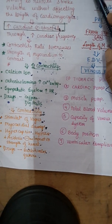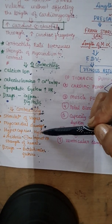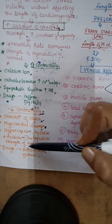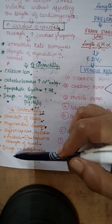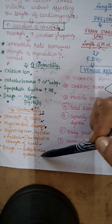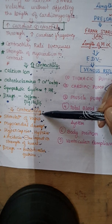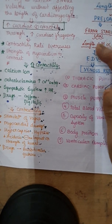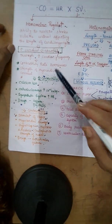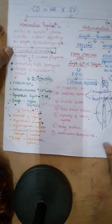Hypercapnia, hypoxia, or acidosis have a negative impact on the strength of cardiac muscle. Drugs such as barbiturates and quinine also have a negative impact on cardiac contractility, ultimately leading to a decrease in stroke volume. So these are the factors which affect cardiac contractility, and cardiac contractility ultimately affects stroke volume.